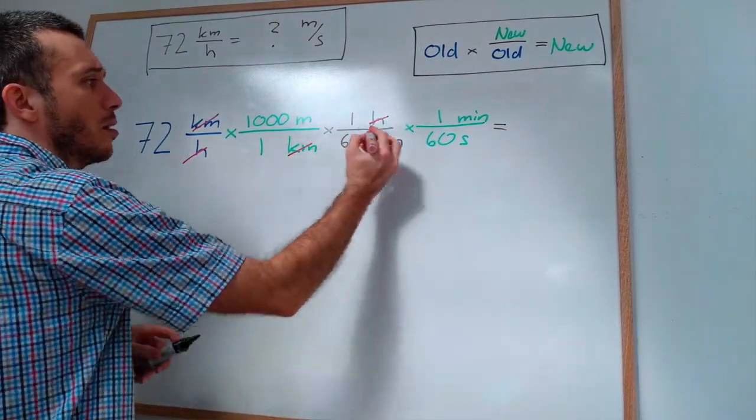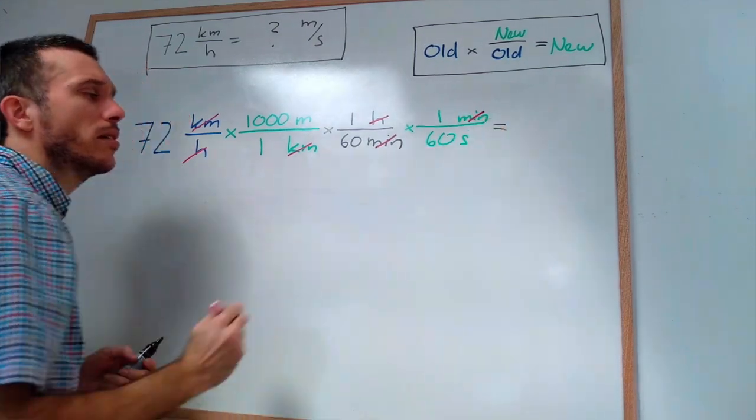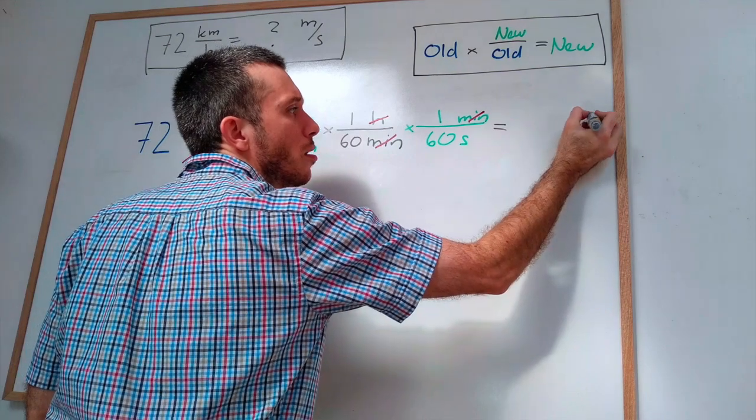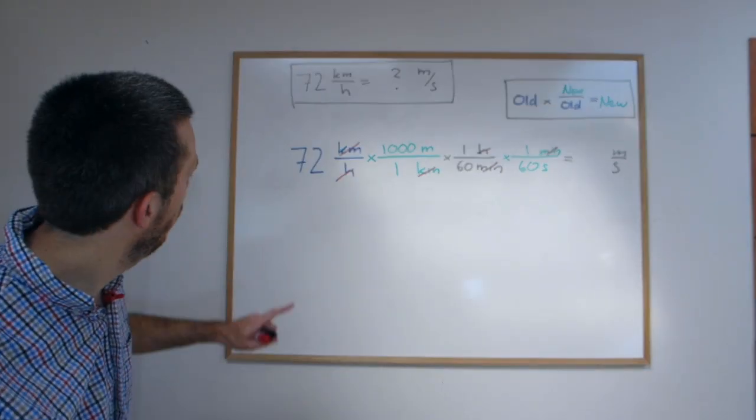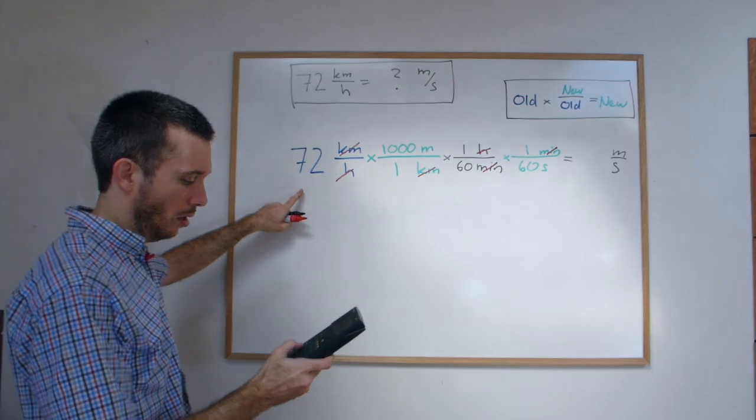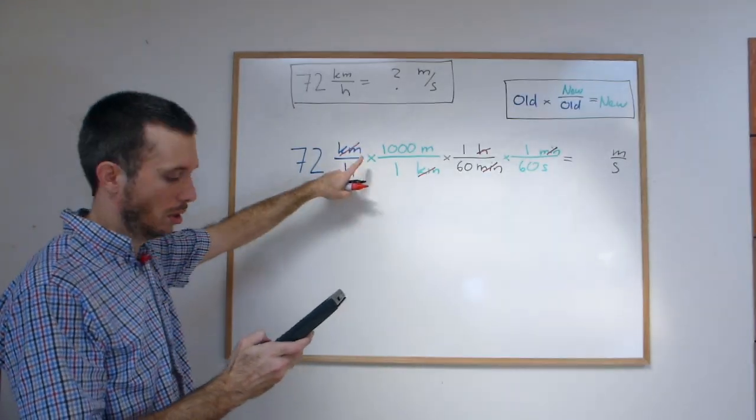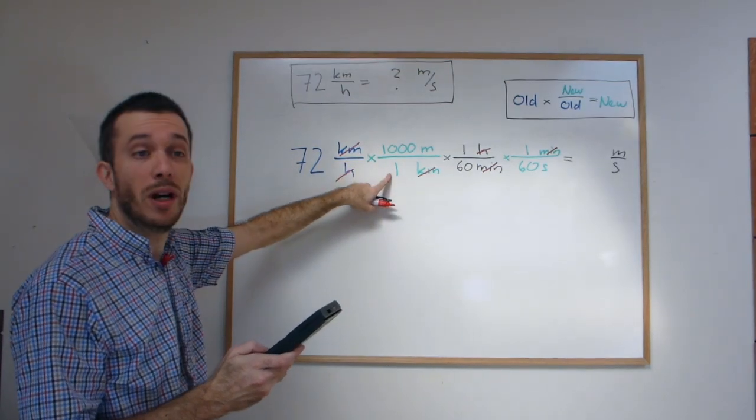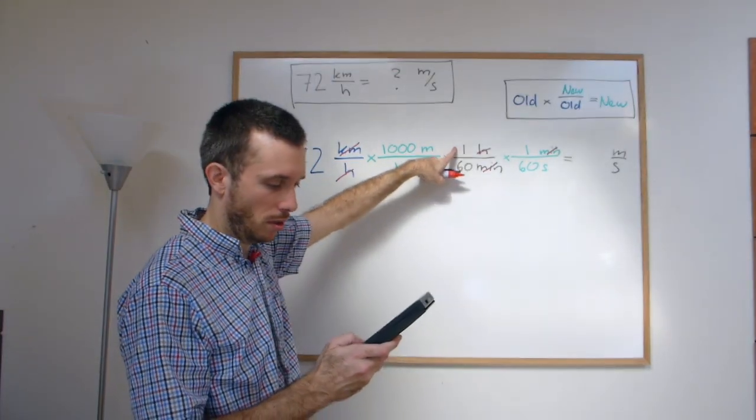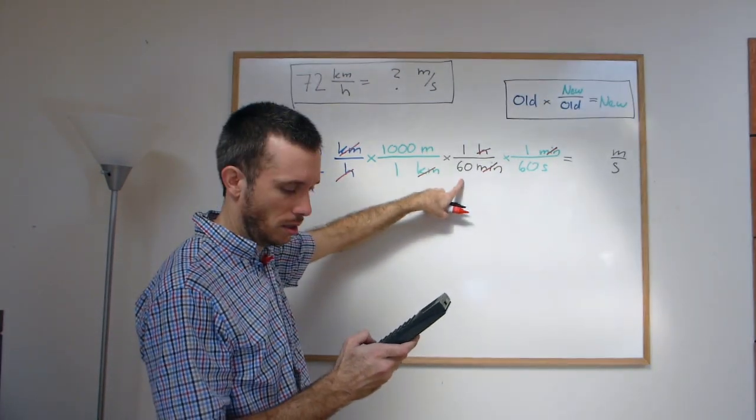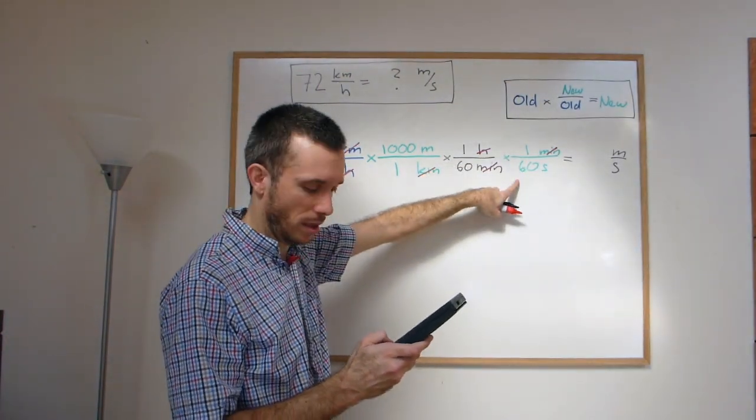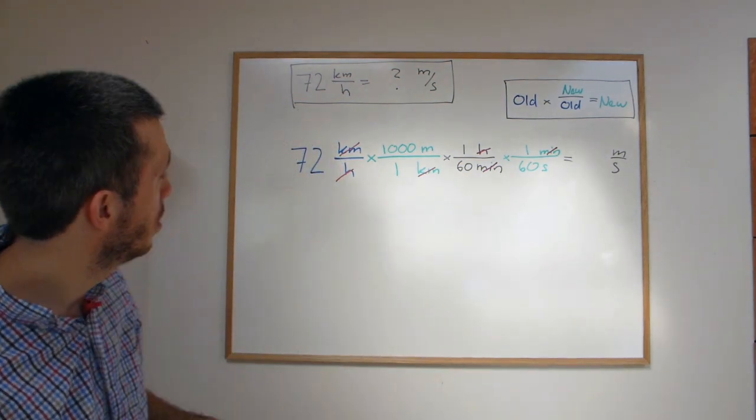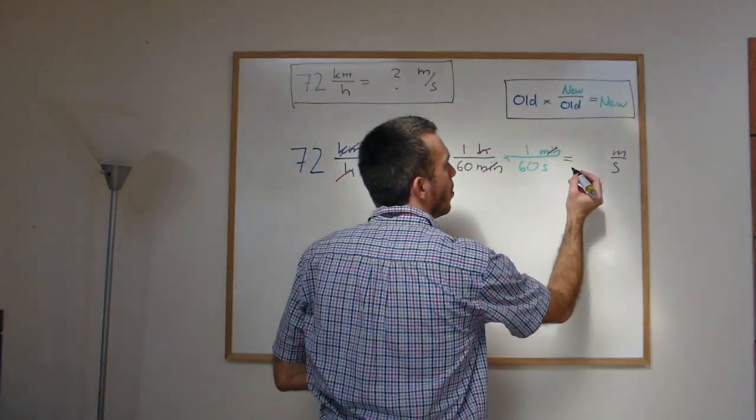Now if I look at this a minute cancels the minute and I will have meters per second as the unit. It's the unit so all I have to do now is in my calculator I do 72 times 1000 divided by 1 times 1 divided by 60 times 1 divided by 60. And what I get is 20 meters per second.